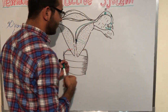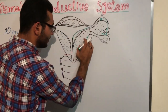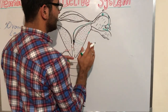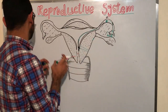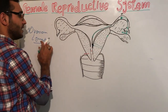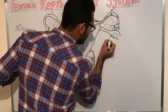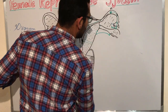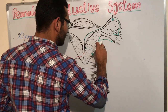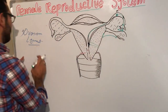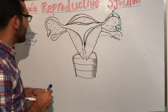The ovarian ligament: this one is the ovary and this one is the lateral wall of the uterus. The ovarian ligament is the ligament which attaches from the ovary to the lateral wall of the uterus. This ligament is known as the ovarian ligament because it connects the lateral wall of the uterus to the ovary.